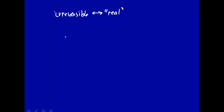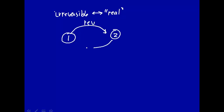With that, let's consider this system. Here's state 1, and here's state 2. Let's take the system from state 1 to state 2 by a reversible pathway, and then let's go back from state 2 to state 1 by some irreversible process. Now let's look at the change in internal energy, delta U. That will be equal to zero, because you're ending up where you started from, and U is a state function.